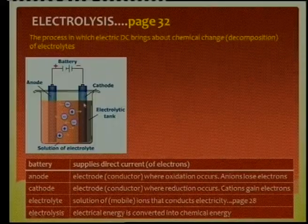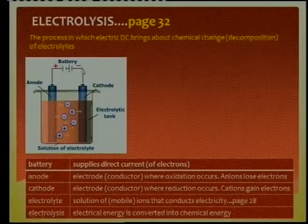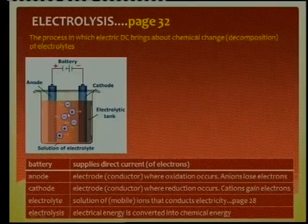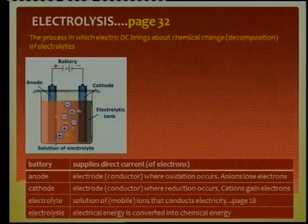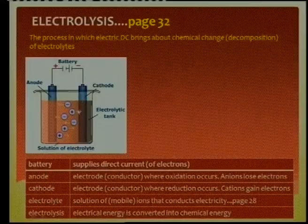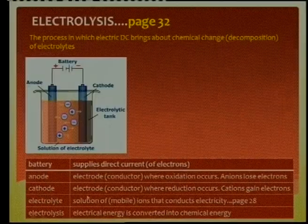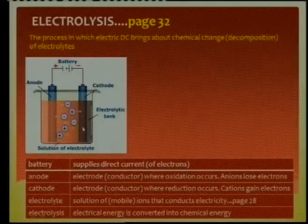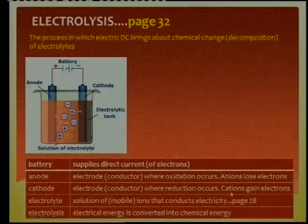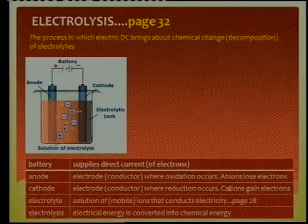The cathode is connected to the battery's negative terminal. Therefore it will be negatively charged, full of electrons, and it will draw cations — positive ions. The positive ions will receive free electrons here, and that will be reduction. So what happens at the cathode? This electrode, which is a conductor, is where reduction occurs, and the cations gain electrons.